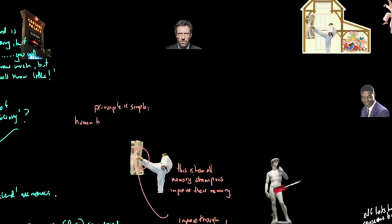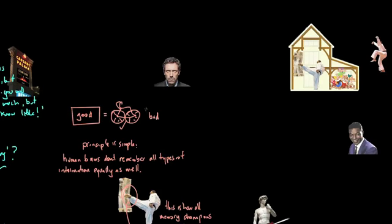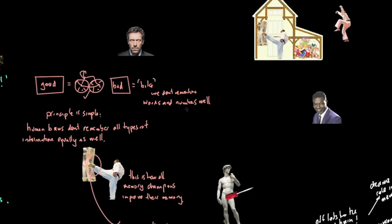The principle is pretty simple. Our human brains don't remember all things equally well. Our brains don't remember words and numbers as well as visual elements. To give you an example, good memory would be a visual image of a bike and some other sensory information. A bad one would be the word bike. So the real principle here at play is to convert those words and numbers into things that we do remember well, which are visual images and including other senses.